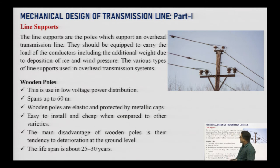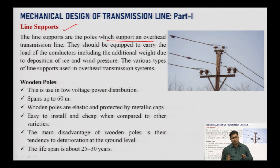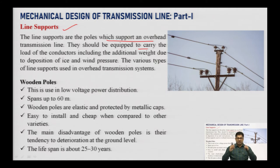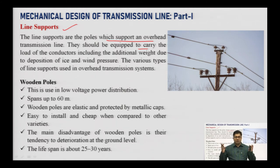The second major component is line support. Line supports are the poles that support an overhead transmission line, and they should be equipped to carry the load of the conductor including additional weight due to ice deposition and wind forces on the overhead transmission line. The pole or line support system must have sufficient strength to handle all these loads.